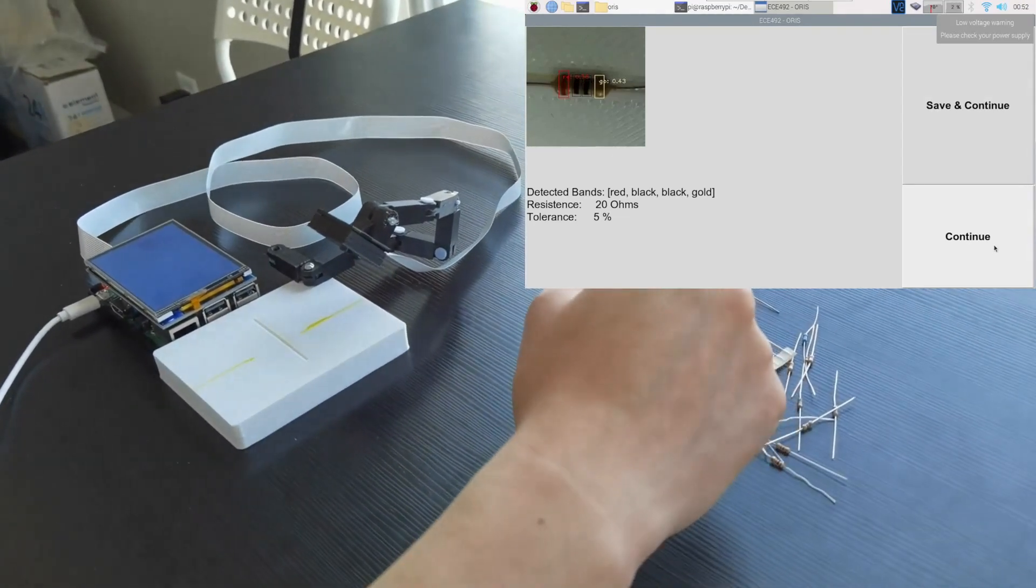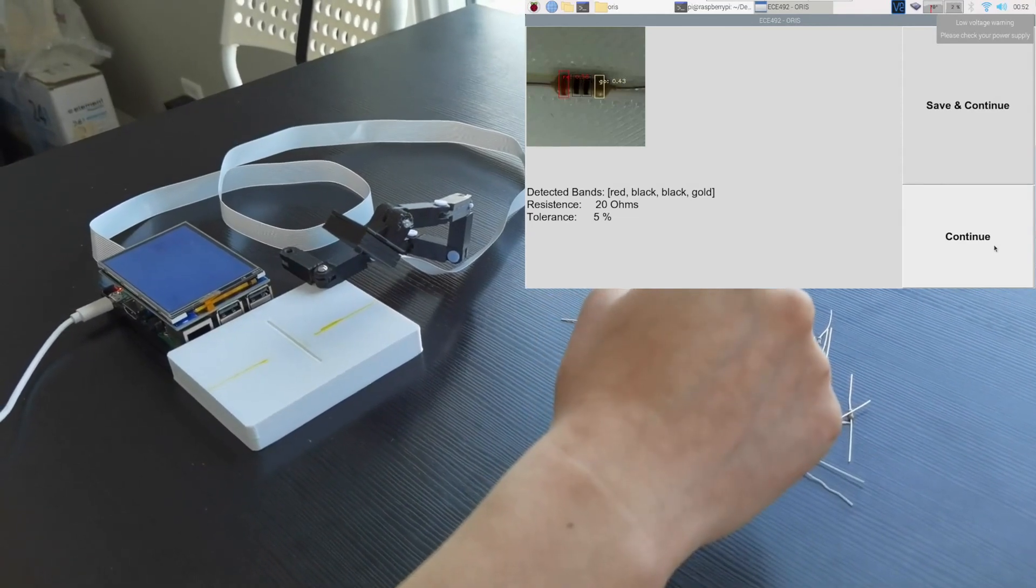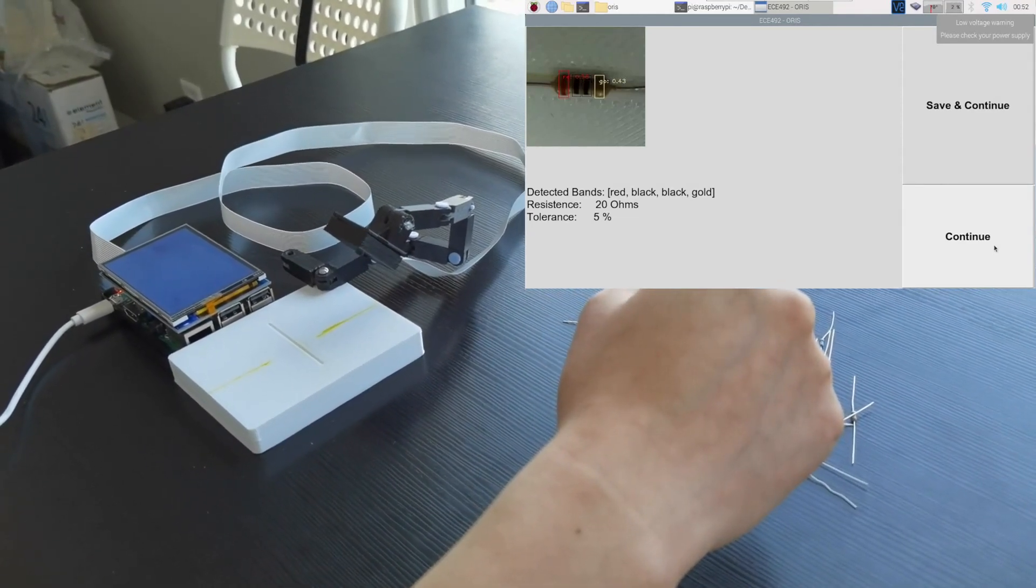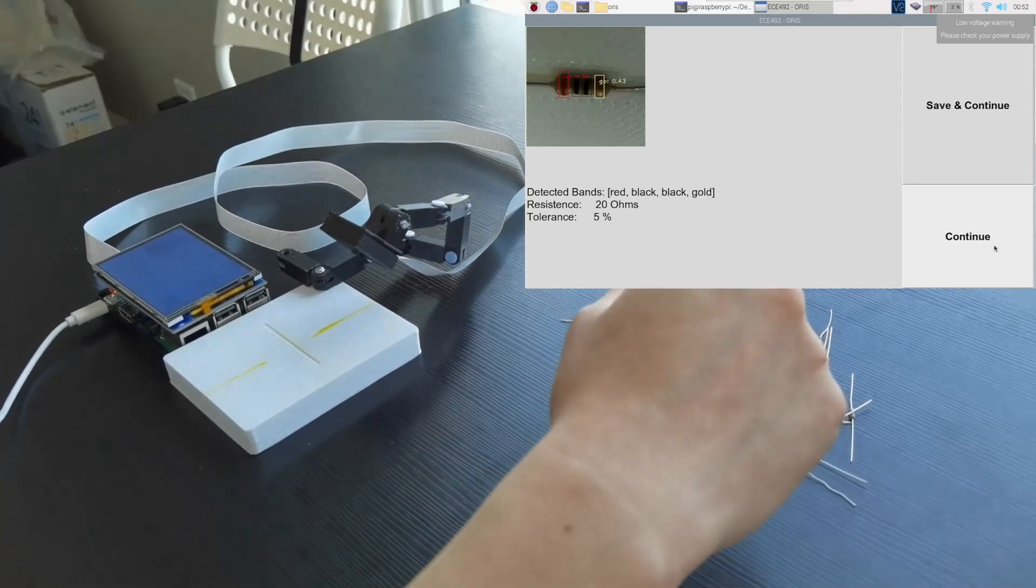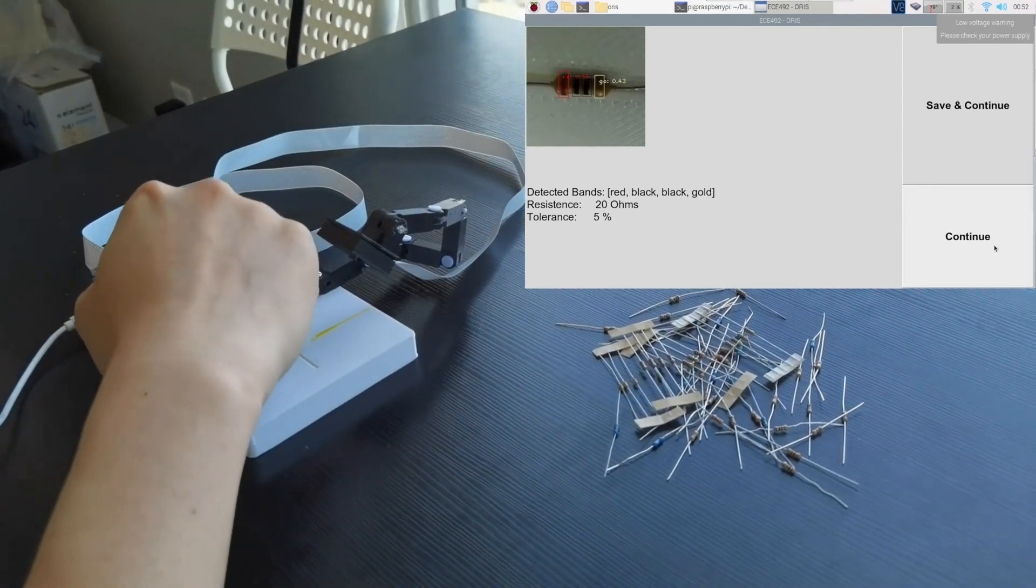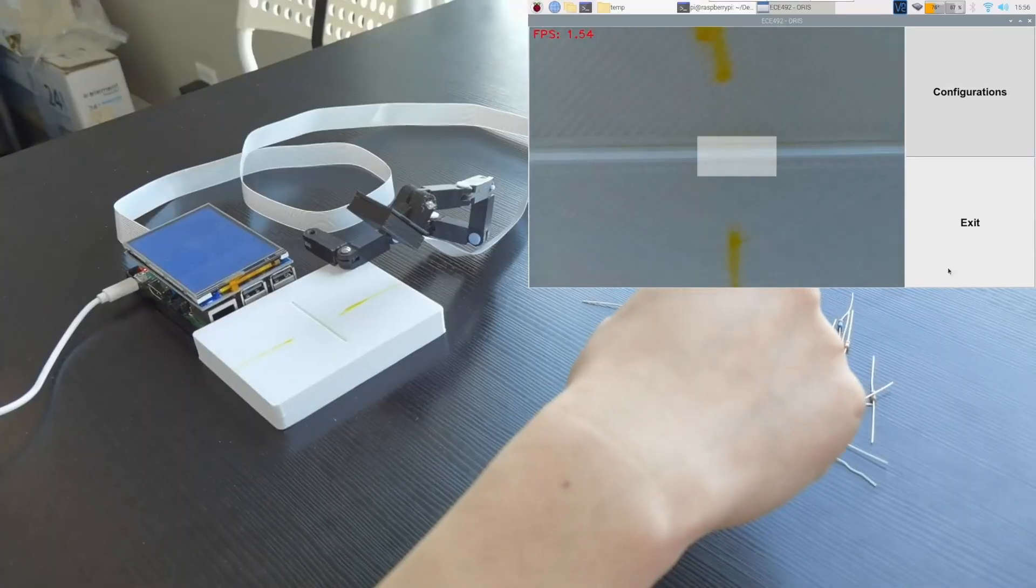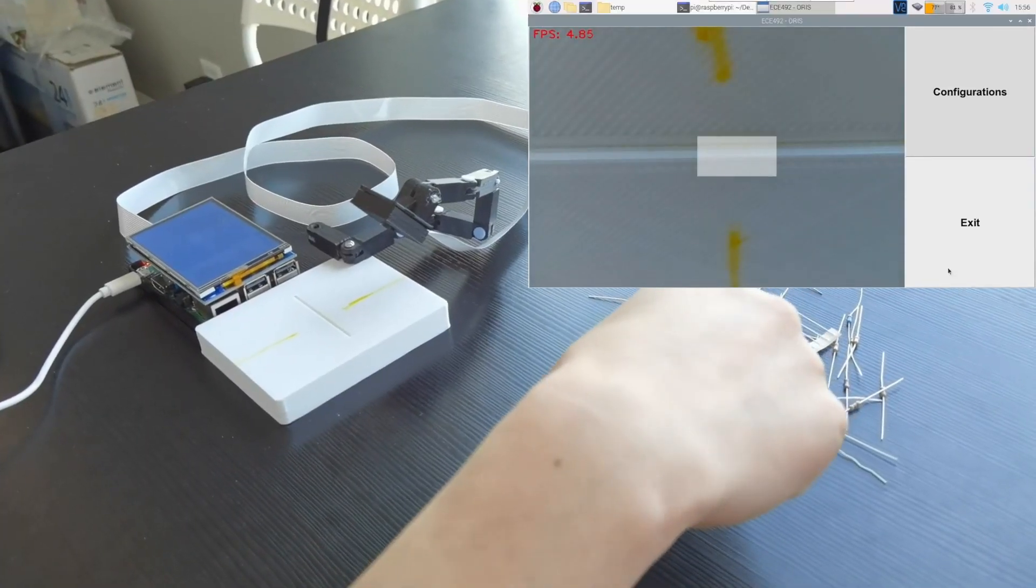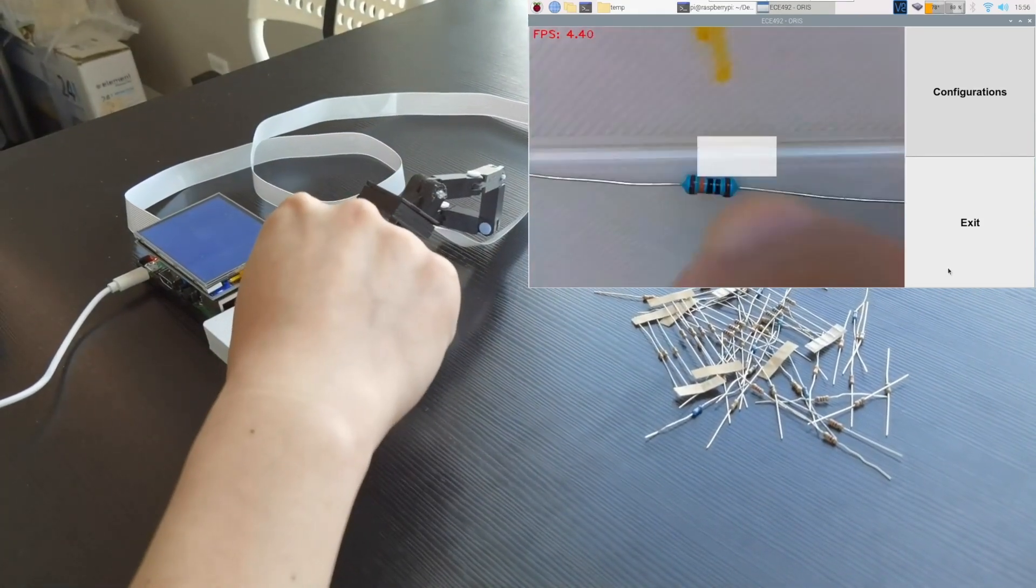So far, we have tested different resistors, got the result, and that is it. But what if I can't memorize the resistors previously scanned? Here's where the record sharing HTTP server becomes handy. Here, I will use the configuration menu to clean out the history to just give us a fresh starting ground. Then, I will scan a couple resistors, obtain the result, and save it into the system. Let's scan four resistors.